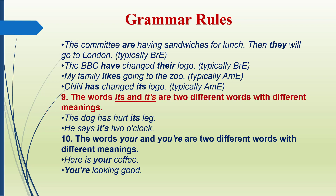Number 9: The words 'its' and 'it's' sound the same but are different words with different meanings. 'Its' (no apostrophe) is a possessive pronoun: 'The dog has hurt its leg.' 'It's' (with apostrophe) means 'it is': 'He says it's two o'clock.' Remember this difference.